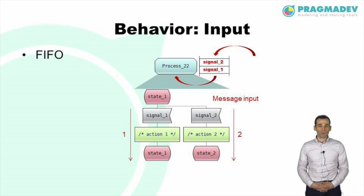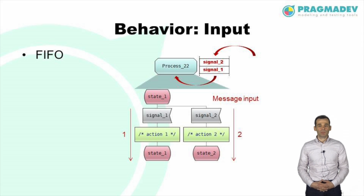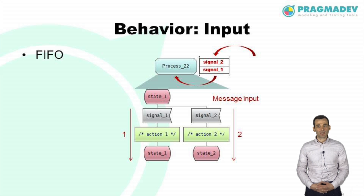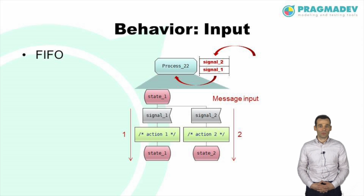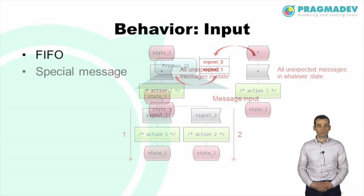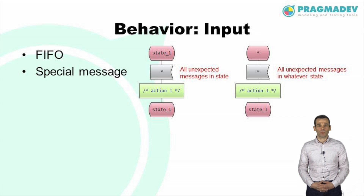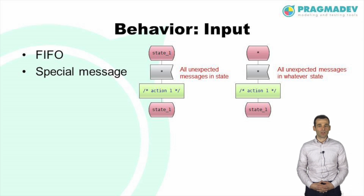Message inputs are consumed in first in first out order. In the example, signal 1 will be treated first causing the execution of action 1. As the process does not change its state after consuming the message, signal 2 is treated next causing the execution of action 2. A star as a message input can be used for handling all unexpected messages — these are all the messages for which no transition has been defined in the current state.